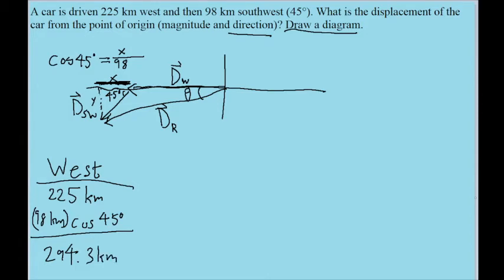Now that does not mean that the car has traveled a total of 294.3 kilometers. This is just specifically the westward component of the car's motion. So now we'll want to do the same thing for south. Now the car is not traveling south at all during this first stretch of the motion, where it's only going west. So we only need to worry about this part right here, this little 45 degree angle bit.